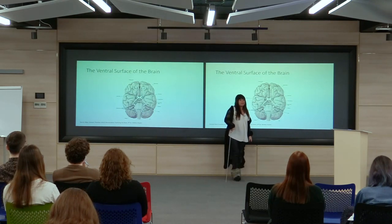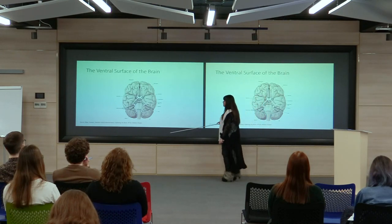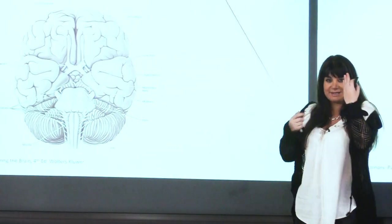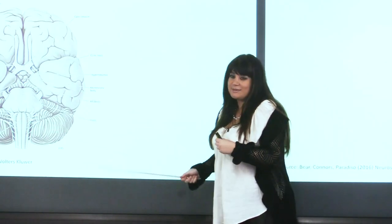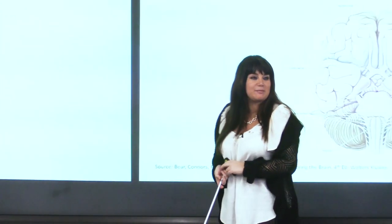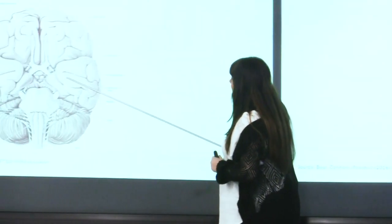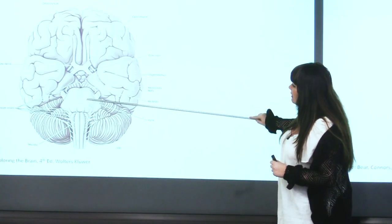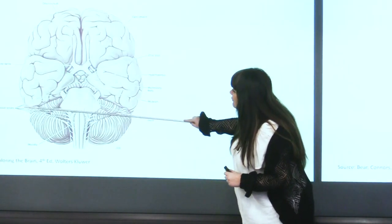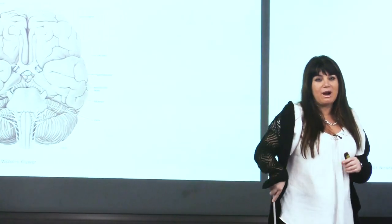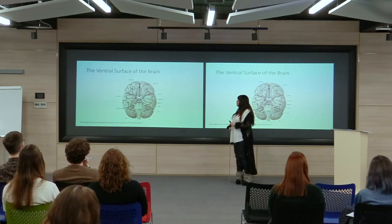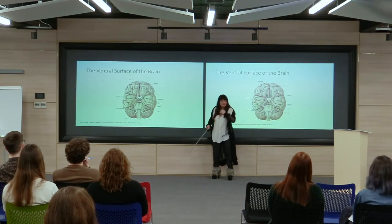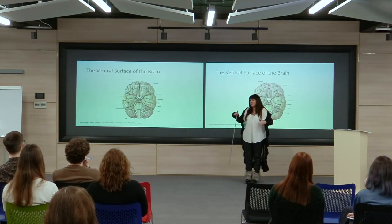The ventral surface of the brain is not as homogeneous as the dorsal view. You can see the olfactory bulbs, the optic nerve, the hypothalamus, the pons, and the cerebellum. There are also different nerve fibers visible. The ventral surface is very different from the dorsal surface, and you'd expect these structures to connect the brain to the spinal cord, allowing the whole body to interact with the brain.